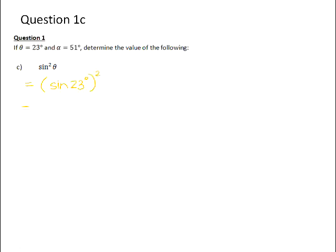So you need to type it into your calculator as the sine of 23 and then square that answer. And in this case, it gives you 0.15.